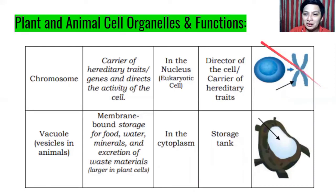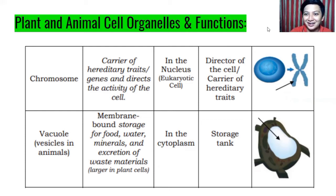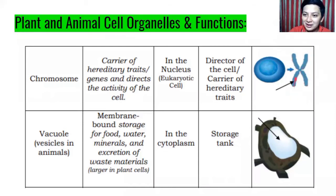Next, we have chromosomes. Chromosomes carry hereditary traits — genes — and direct the activity of the cell. They can be found inside the nucleus. All the genetic materials or genes inherited from our parents are in the chromosomes. These are found only in eukaryotic cells. Chromosomes are the director of the cell and carrier of hereditary traits. They look like a ribbon — an X shape.